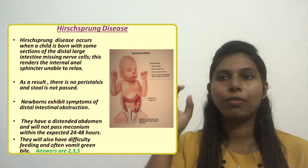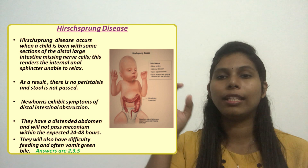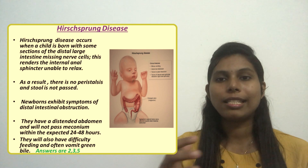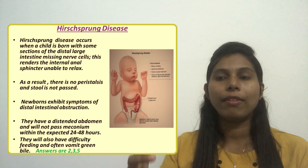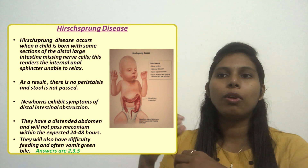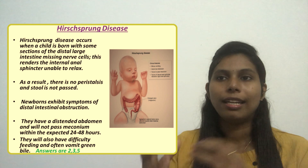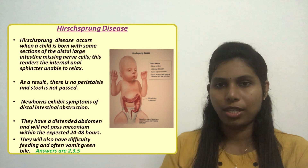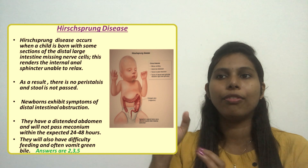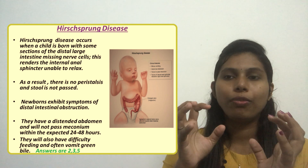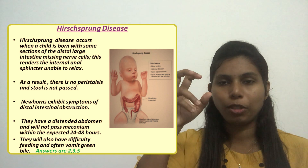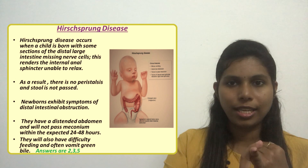A child with Hirschsprung's disease will not pass meconium within the expected 24 to 48 hours. As a result, the child may have a distended abdomen and show symptoms of distal intestinal obstruction. They will also have difficulty feeding and often vomit green bile.